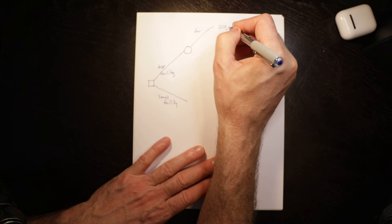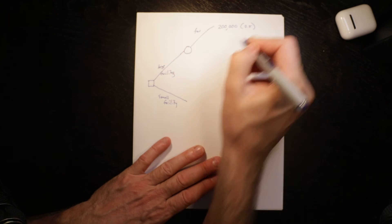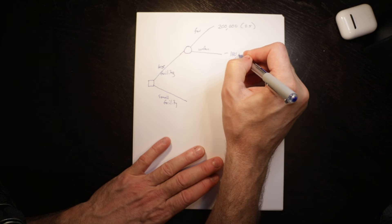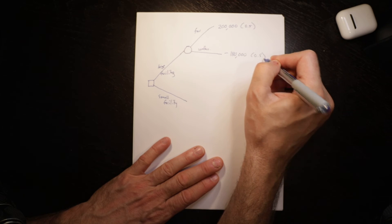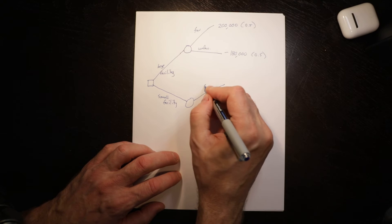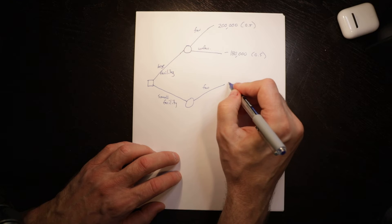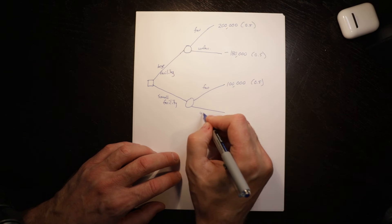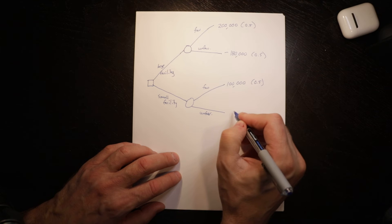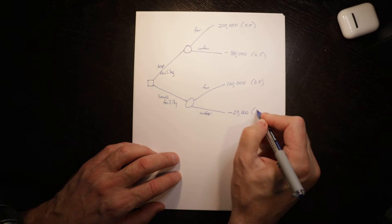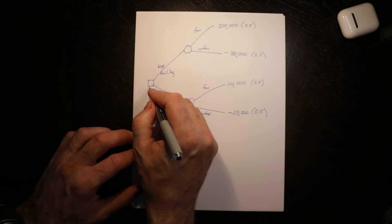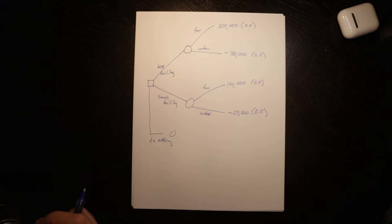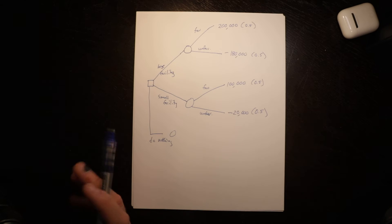So we have a favorable market outcome where we would make $200,000, with a probability of 0.5, and an unfavorable outcome of negative $180,000, also with probability 0.5. If we build small, we would have a favorable outcome of $100,000 with probability 0.5, and an unfavorable outcome of negative $20,000 with probability 0.5. There is also the do-nothing option, where we have no costs and no revenues — it's zero.